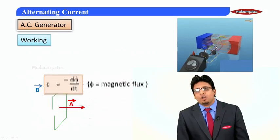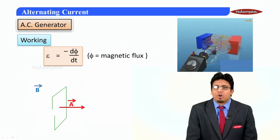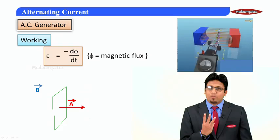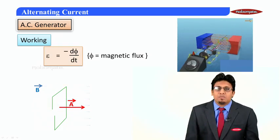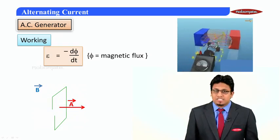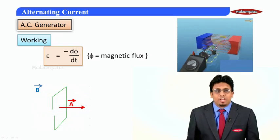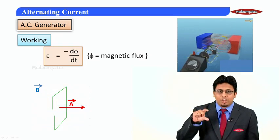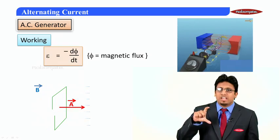First, by changing the magnetic field. Second, by changing the area of the coil—that means either reducing the area or extending the area.